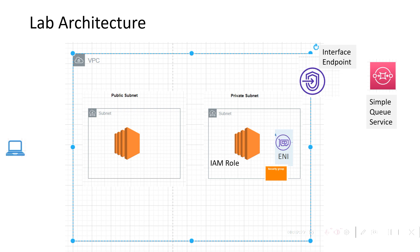Then we will be doing SSH from our machine to this public EC2 machine, and from there we will log in to the private EC2 machine. And then we will be adding some security rules in the security group which is attached to the interface endpoint so that we can access the Simple Queue Service from our private EC2 machine. So this is the architecture of our lab. Let's jump into the lab for today.